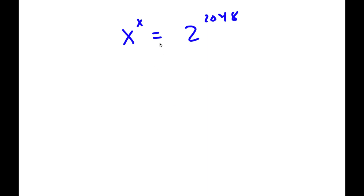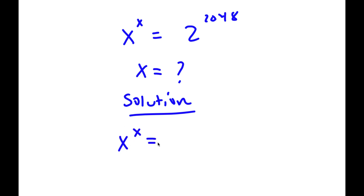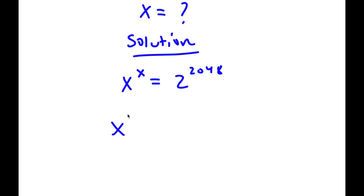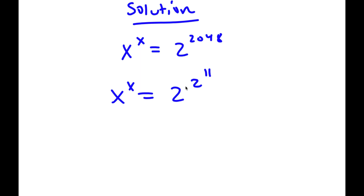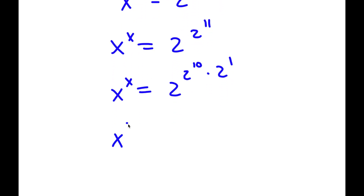In this problem, I have x to the power of x is equal to 2 to the power of 2048, and I want to find the value of x. I start by rewriting 2048 as 2 to the power of 11. So now I have x to the power of x equals 2 to the power of 2 to the power of 11. Now, 2 to the power of 11 is the same as 2 to the power of 10 times 2 to the power of 1, which is also the same as 2 to the power of 2 times 2 to the power of 9.